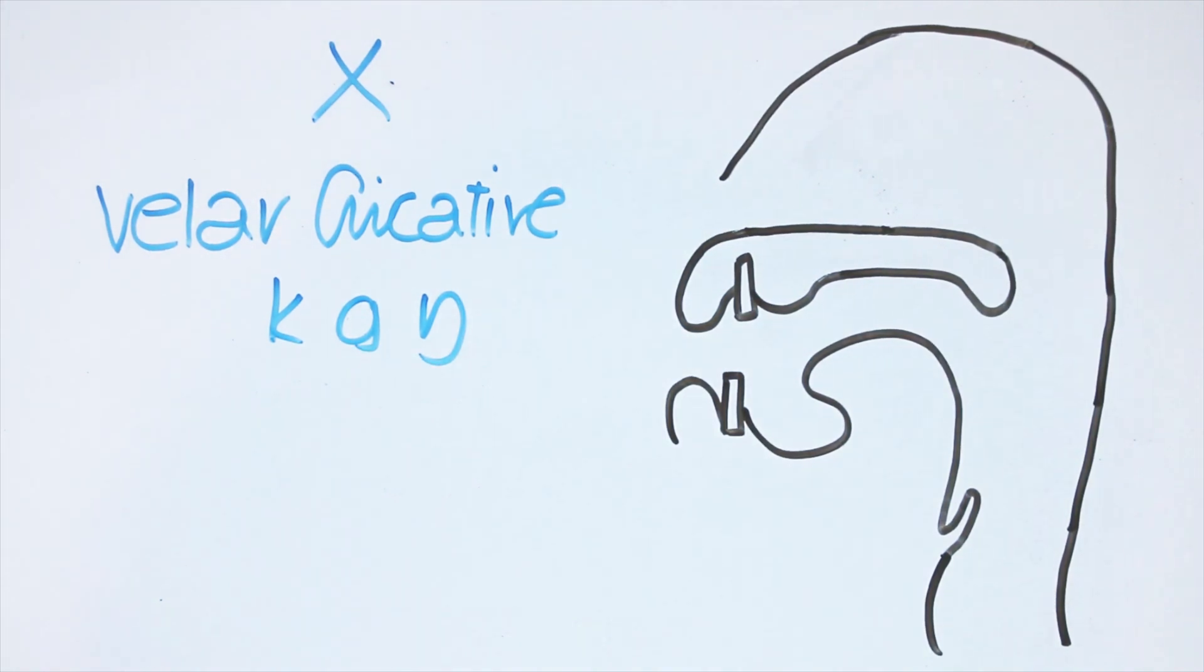English used to have a native velar fricative, which we will look at later. It is always found unvoiced in English, but a voiced version would sound like this.